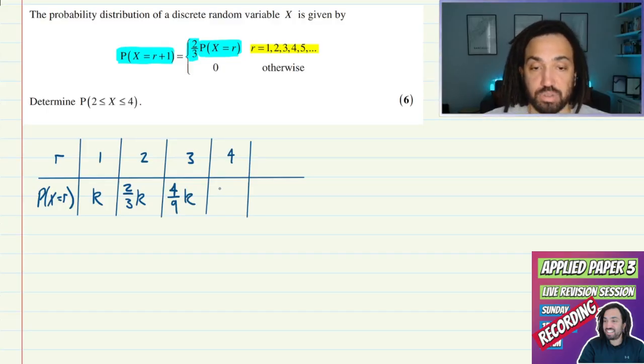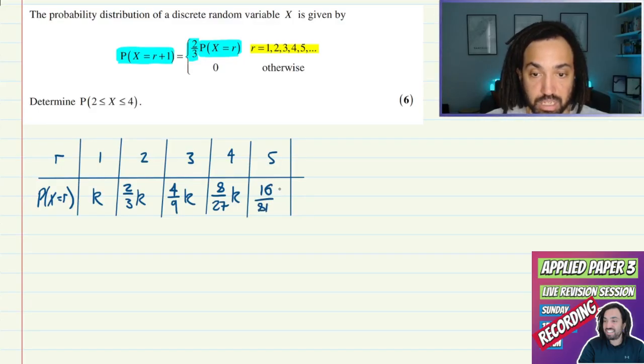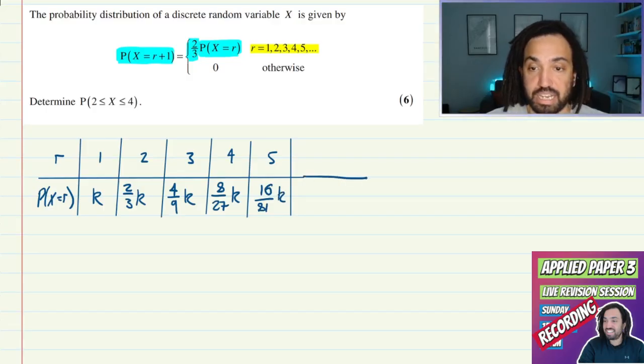The next one along will be 2 thirds of that of course, so that will be 8 over 27. And then we'll do one more: when r is 5 it'll be 2 thirds of this, so it'll be 16 over 81. And this is just going to carry on and on and on like so.